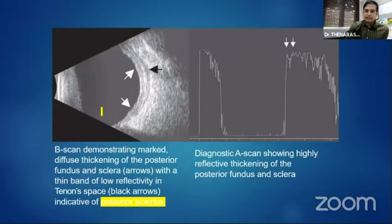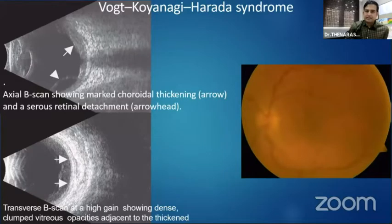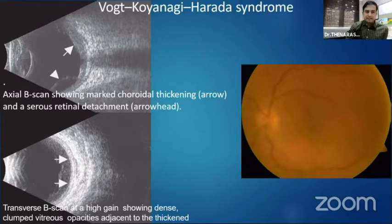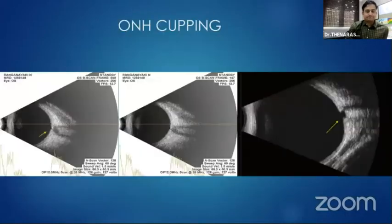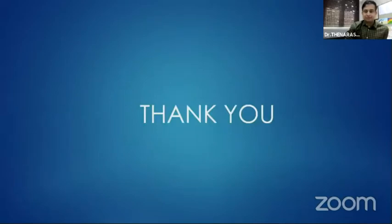In some inflammatory conditions, in posterior scleritis there is a classic T-sign, mainly due to low-reflective infiltrate behind the peripapillary sclera, with increased RCS thickness. In VKH syndrome, multiple serous detachments can be seen, with RCS thickness and mild vitreous dot echoes suggestive of inflammation when gain is increased. Thank you.